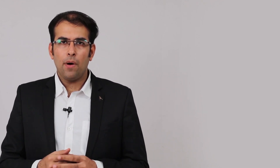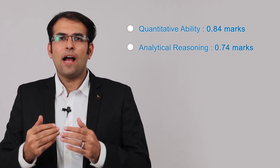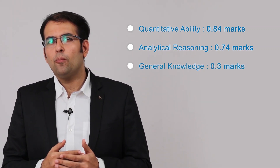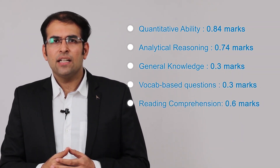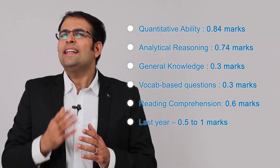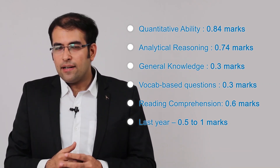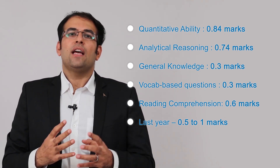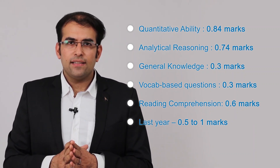When talking about a variable marking system, we've had papers in the past with random weightages like 0.84 for one section and 0.74 for another. A GK section may have a weightage of 0.3 marks per question, while last year it had a weightage between 1 and 0.5 marks. This means IIFT 2018 may or may not follow the same pattern as 2017 — a challenge especially for students planning only on a standardized exam format.